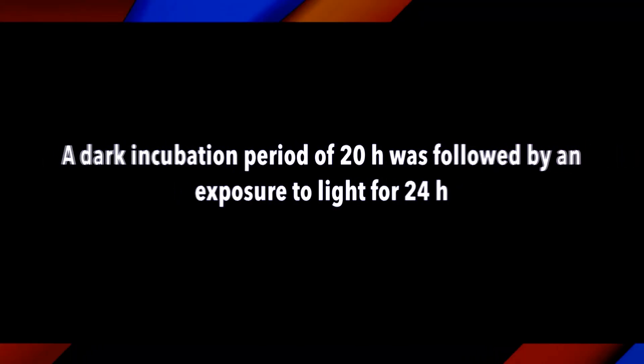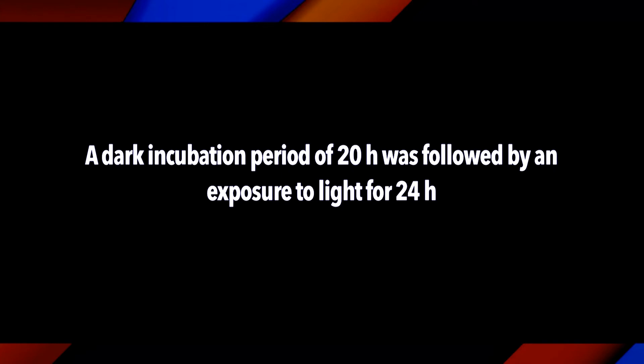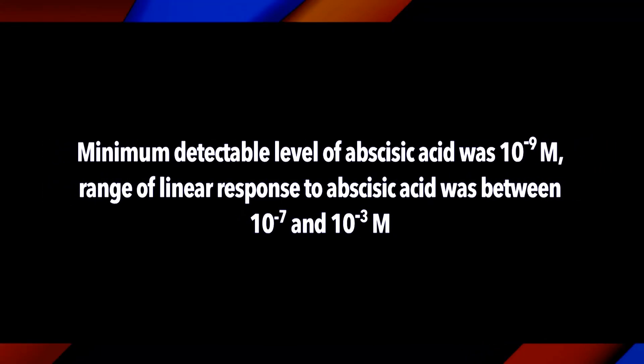A standard curve based on the inhibition of cucumber cotyledon greening, as reported by Fletcher et al. in 1983, ranging from 10⁻⁹ to 10⁻³ molar of ABA, was also obtained for comparison. A direct incubation period of 20 hours was followed by exposure to light for 24 hours. Under these conditions, the inhibition of hypocotyl elongation is proportional to the abscisic acid applied. The minimum detectable level of abscisic acid was 10⁻⁹ molar, and the range of linear response to abscisic acid was between 10⁻⁷ and 10⁻³ molar. This assay is 10 times more sensitive than the cucumber cotyledon greening bioassay for abscisic acid.